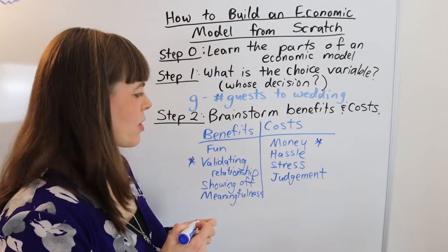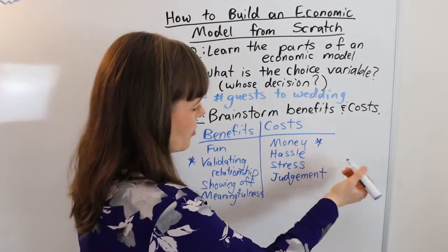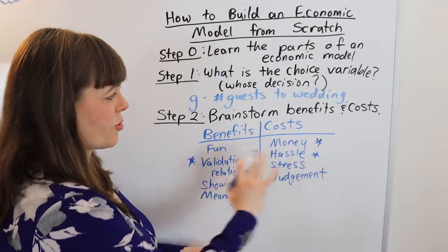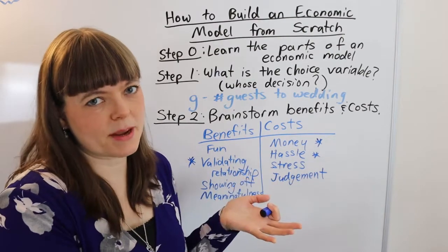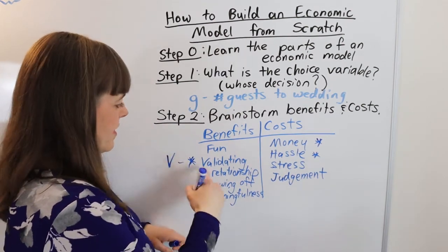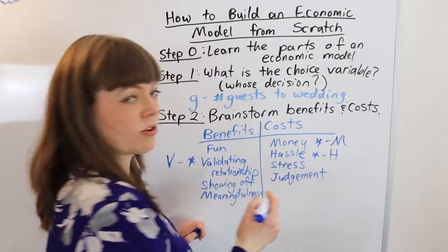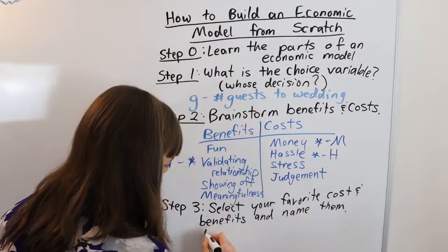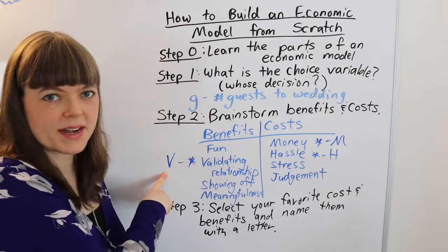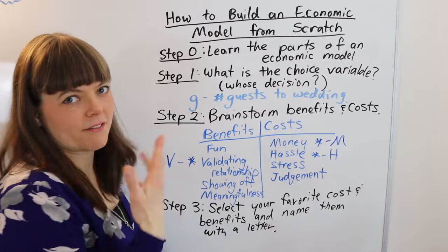And of course, the financial cost of having a wedding is pretty stressful as well. And since maybe I'll do a model with three things, so I'm going to let hassle be the other thing I'm going to choose. So once you've brainstormed the costs and benefits, I guess the next step would be to choose a couple that you like and name those variables. So I'm going to call this V, validation of relationship. I'm going to call this M for money, and we'll call this H for hassle. So the third step here is going to be to select your favorite costs and benefits and to give them a name or a variable that you can use in your model. Now I'm going to erase all of this and just use the variables that I've already defined.